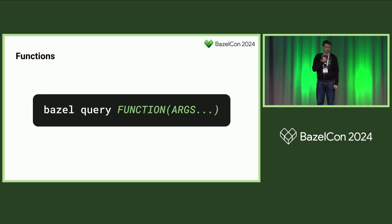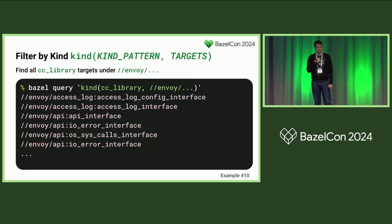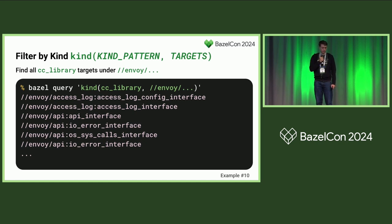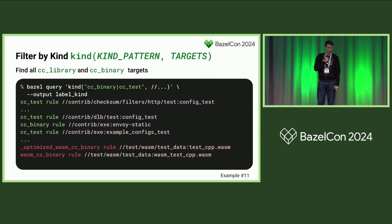That's what we could do without any functions. Now let's introduce some functions. They are usually used to filter results in some ways, or there are graph operations that expand or work differently on results. The first one is filtering by kind. The first parameter is the pattern used to filter, and the second is the set of targets. So here we're finding all cc_library targets under Envoy — quite straightforward. Next, to find cc_library and cc_binary targets, note that the pipe symbol is used because this pattern is actually a regular expression — the Java flavor.